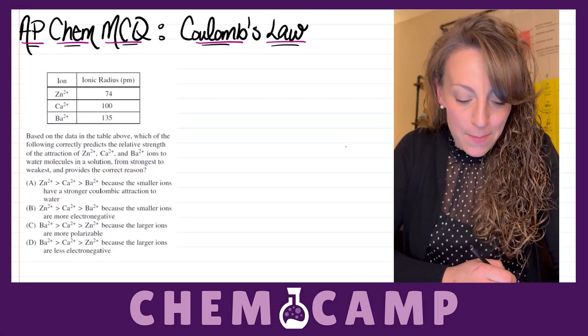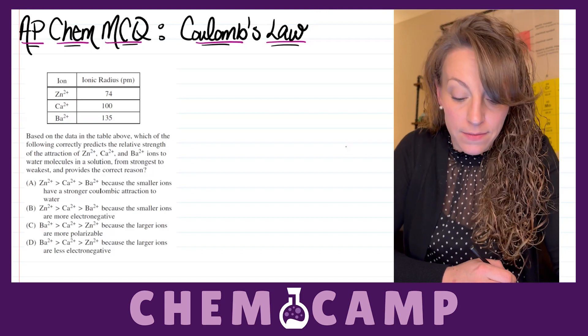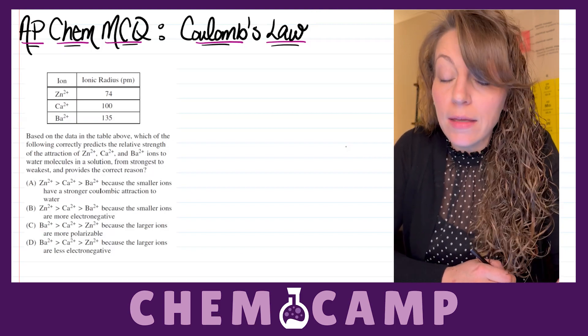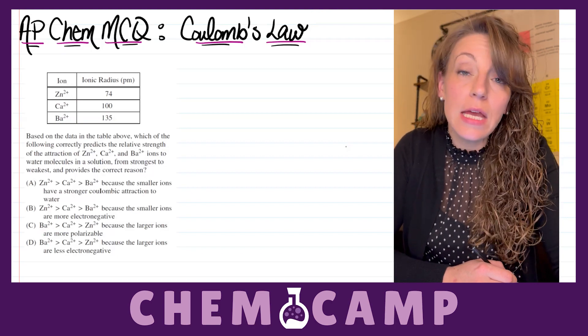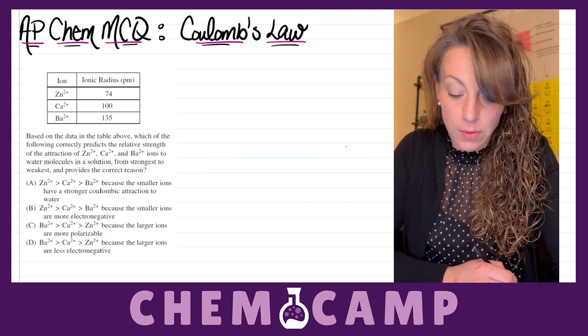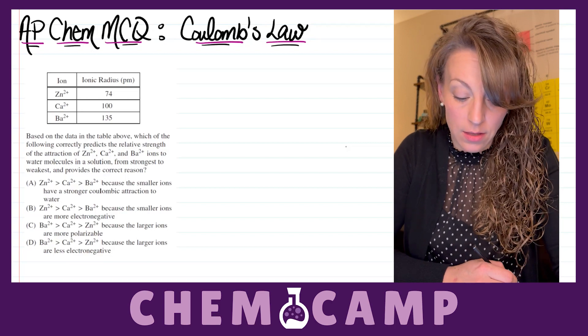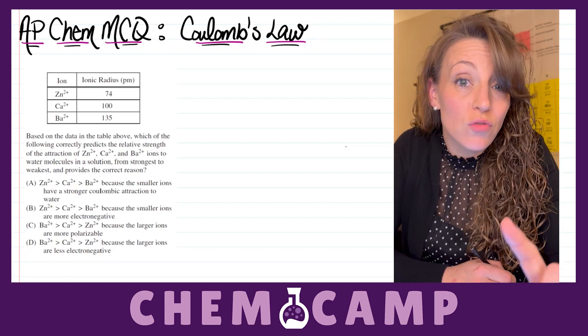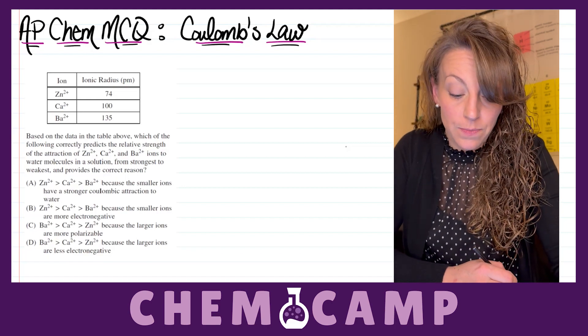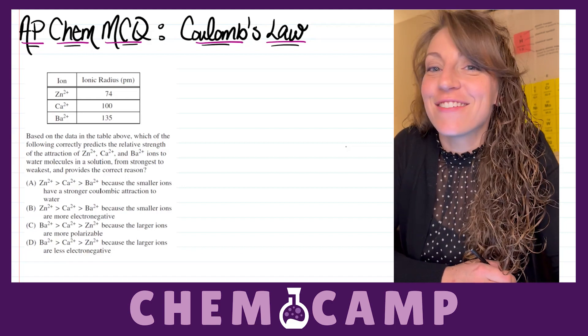The problem reads: based on the data in the table above, which of the following correctly predicts the relative strength of attraction of Zn²⁺, Ca²⁺, and Ba²⁺ ions to water molecules in a solution from strongest to weakest, and provides the correct reason.